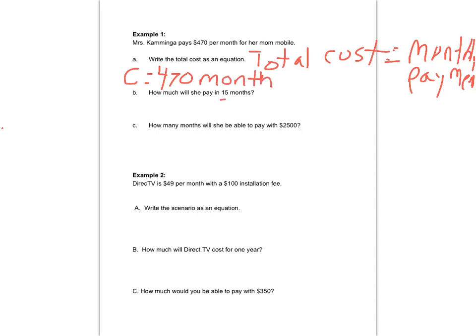How much will she pay in 15 months? So I know that 15 is going to be placed in the equation for months. So now I have C equals $470 times 15. $470 times 15 is $7,050.